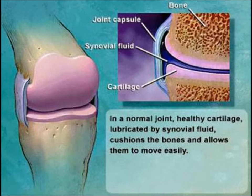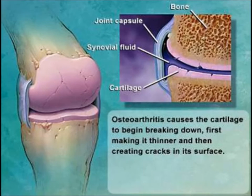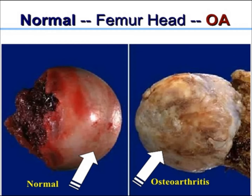This is the normal anatomy of a synovial joint. A synovial joint is lined by articular cartilage, and there is synovial fluid. With aging, there is age-related degeneration of the cartilage, and cracks appear in the cartilage. These cracks expose the underlying bone, leading to pain and deformity.